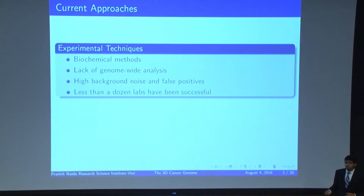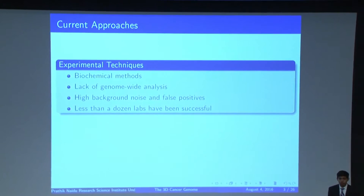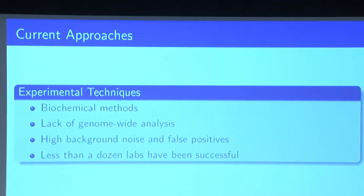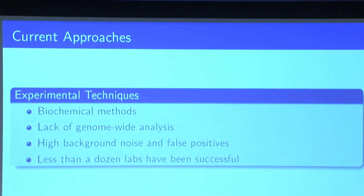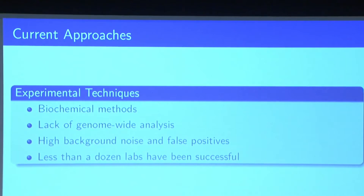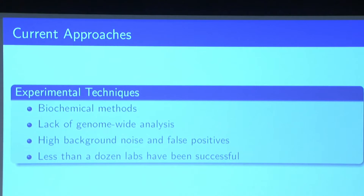So far, we've been using experimental techniques to study these interactions. However, there are two key problems with these methods. The first is that they lack a genome-wide analysis, making it difficult to characterize DNA interactions across the entire genome. The second problem is that these methods are prone to a high amount of background noise and false positives. Both of these problems are illustrated by the fact that less than a dozen labs have actually been successful at generating this experimental 3D interaction data.